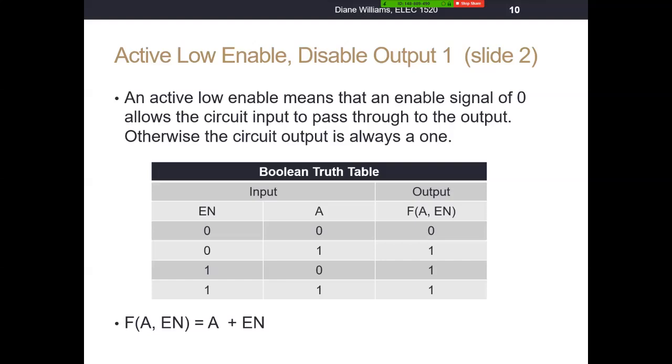So from that, you should remember that active low enable means zero enables a circuit, and active high enable means a one enables a circuit.